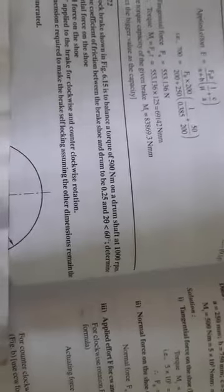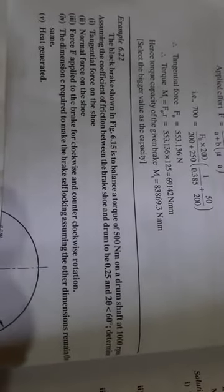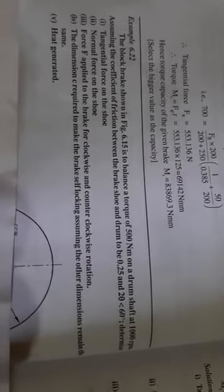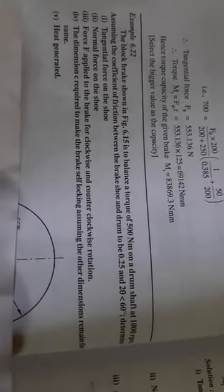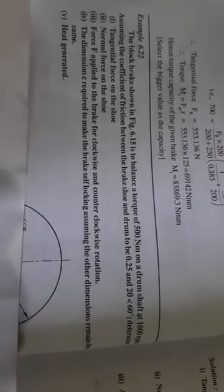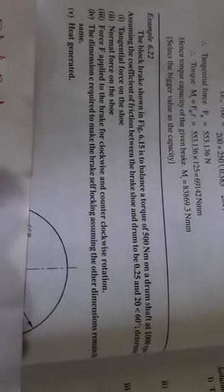Next, Example 2 of Block Break Problem. The block brake is shown in figure 6.12 to balance the torque of 500 Nm on a drum shaft at 1000 RPM, assuming the coefficient of friction between the shoe and the drum is 0.25 and theta is less than 60 degrees. We need to determine the tangential force on the shoe, the normal force on the shoe, the force applied to the brake for clockwise and counterclockwise rotation, dimension of C required to make the brake self-locking, and heat generated.